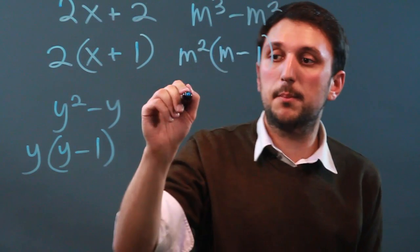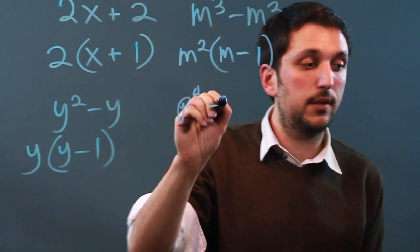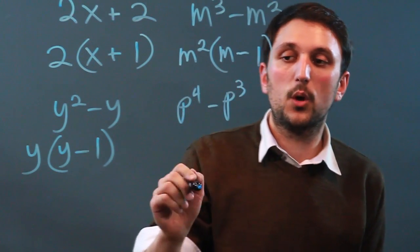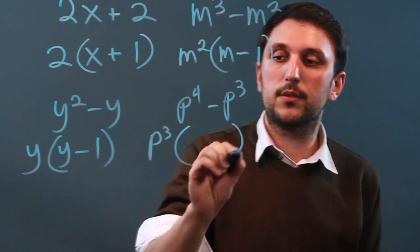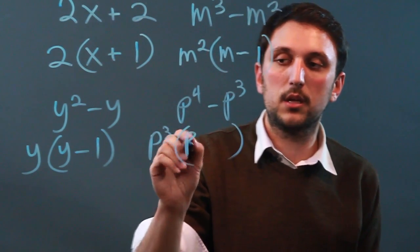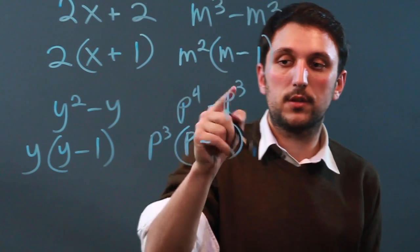And then if we did p to the fourth minus p cubed, we can pull out a p cubed. So we say p cubed, parentheses, and all that's left here is p to the first minus 1.